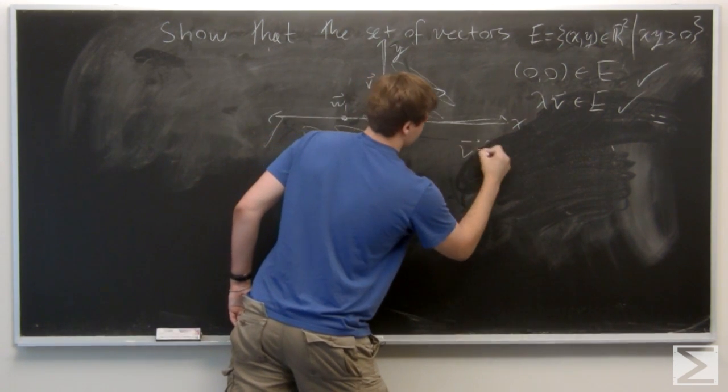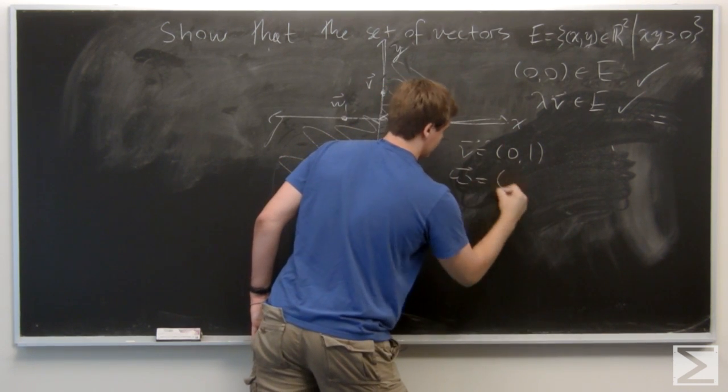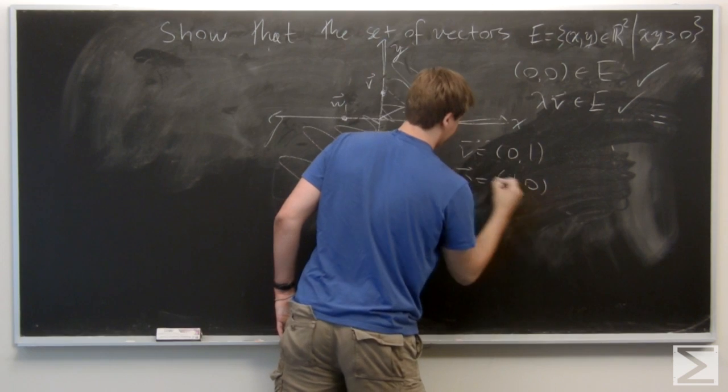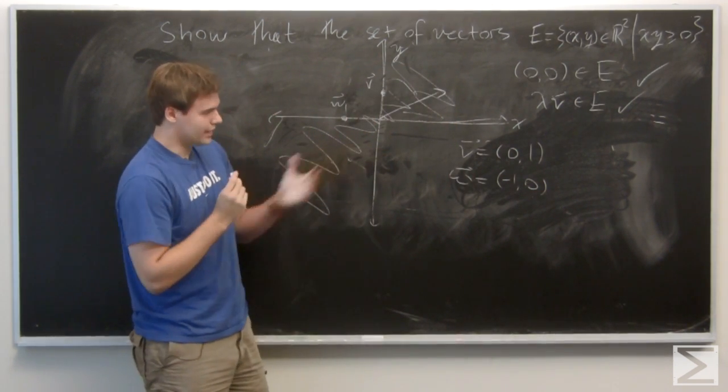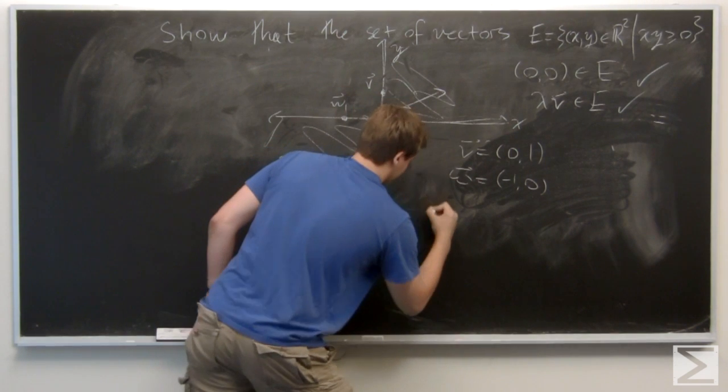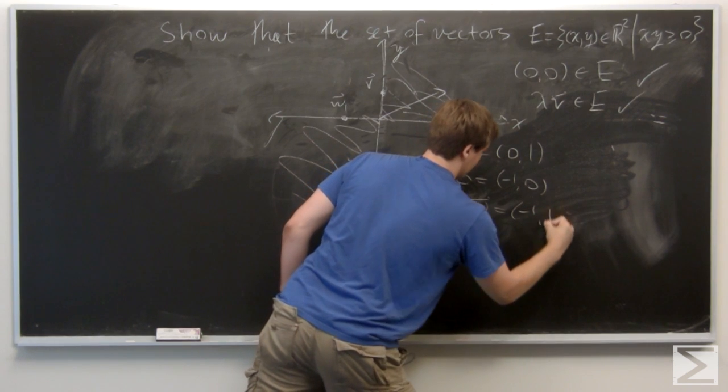So V is (0,1) and W is (-1,0). Okay, so we just add them and we get V plus W is (-1,1).